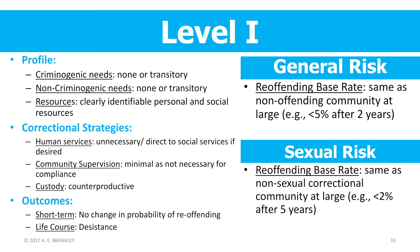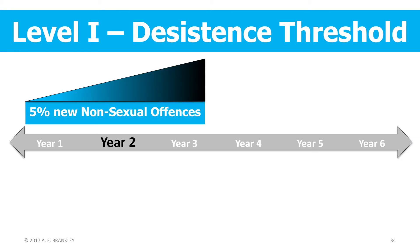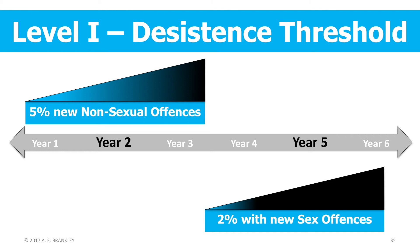If these numbers are hard to visualize, let me put it to you like this. The threshold for general risk is 5% after two years, meaning that after two years in the community only 5% will have new offences. The threshold for sexual crime is 2% after five years, meaning that after five years in the community, only 2% of individuals will have new sexual offences and 98% will not.